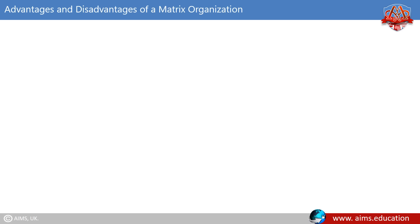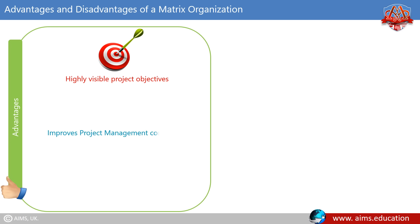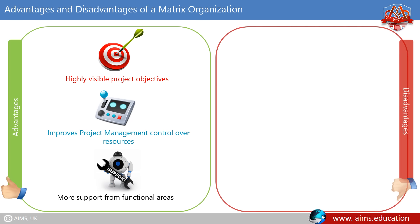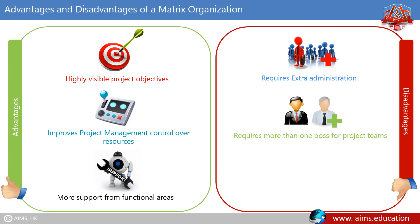The advantages of matrix organization structures are: highly visible project objectives, improved project management control over resources, and more support from functional areas. The disadvantages are: it requires extra administration, it requires more than one boss for project teams, and it is more complex to monitor and control.